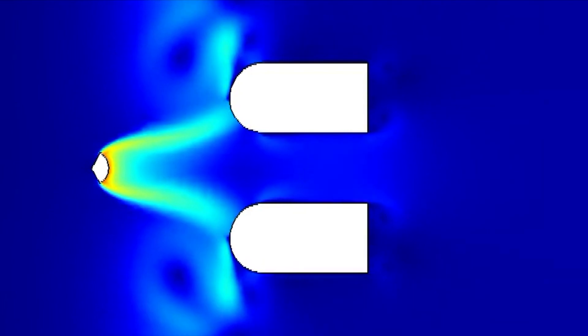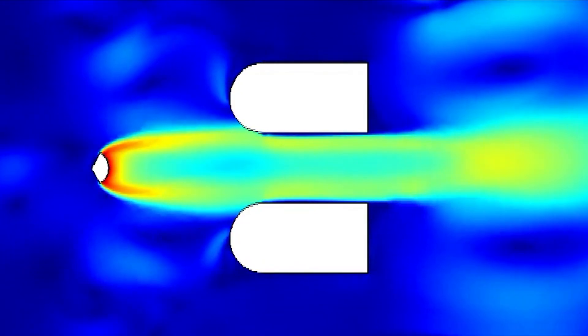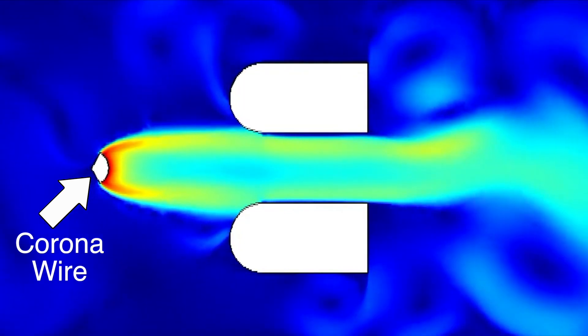This is a console learning of what an EHD thruster would look like during operation. EHD thrusters work by ionizing air around a corona wire using high voltage. These ions can expand outward and move towards an oppositely charged collector electrode, pushing neutral air particles in the process.